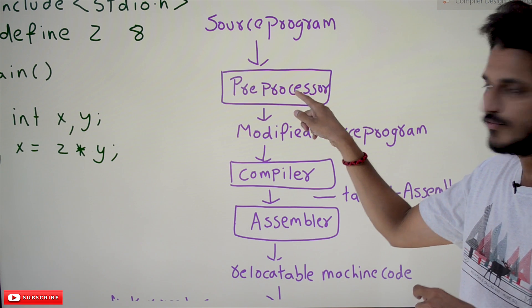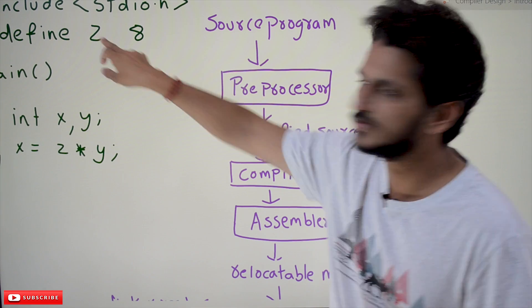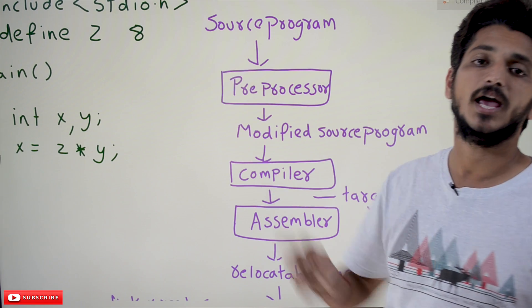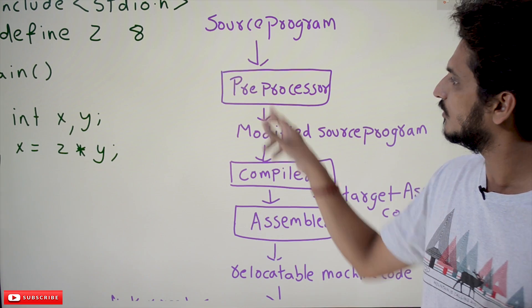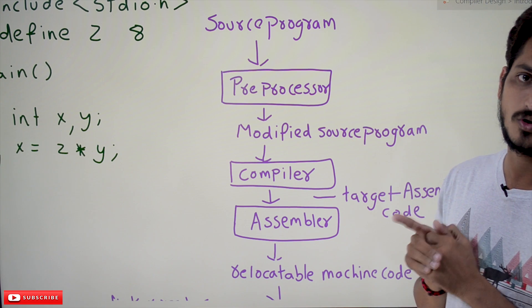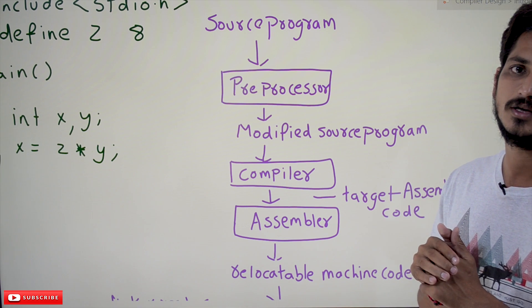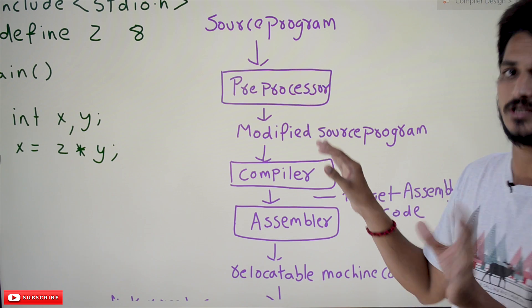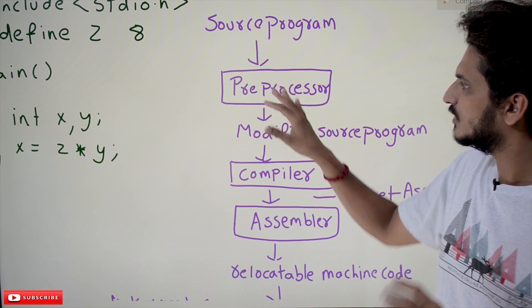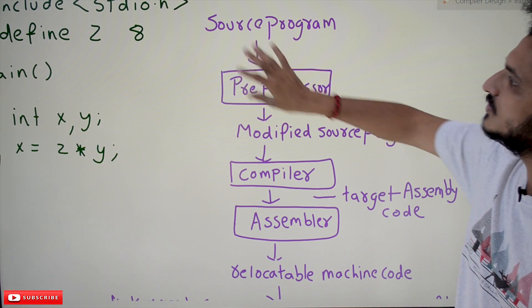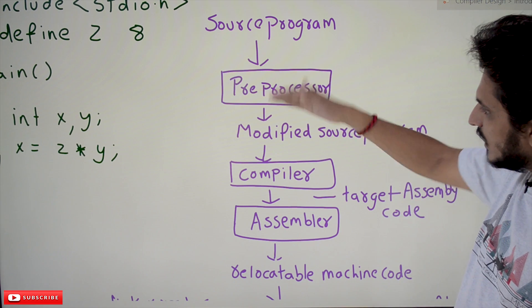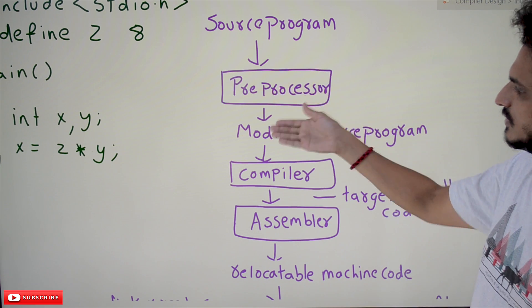The main goal of preprocessor is to convert these macros, replace the macros. Wherever there is Z, replace it with 8. That is the goal of preprocessor. Not only that, it will do other things also. We place comments in the source program - eliminate those comments. There are many responsibilities. In our subject, that understanding is enough. We don't study much about this preprocessor. The modified program is given as output from this preprocessor stage.